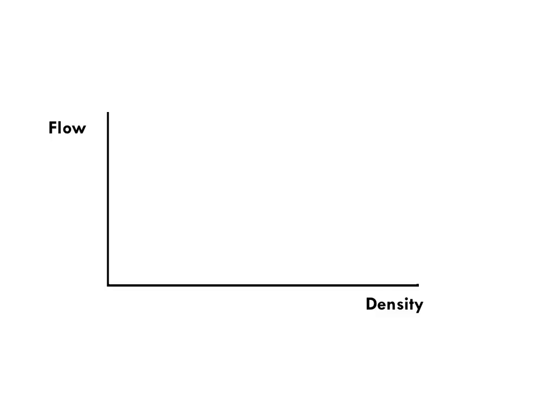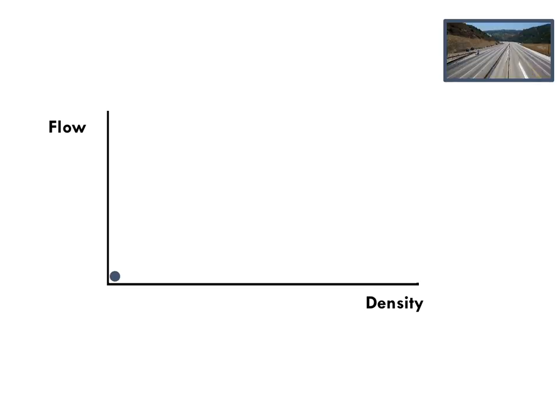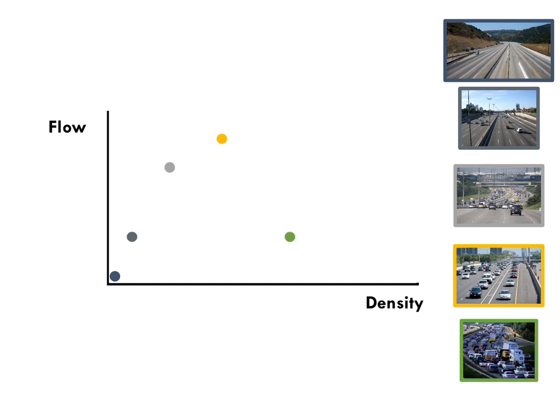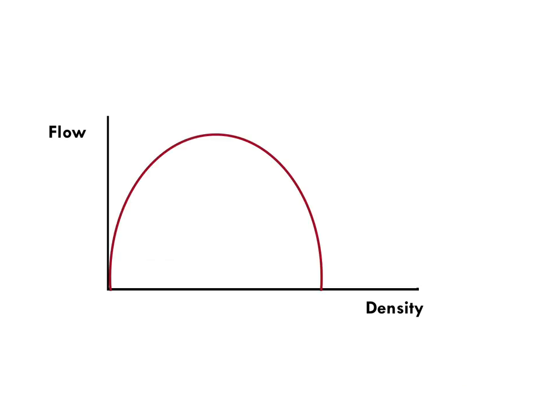I want you to take a moment to think about the relationship between flow and density. Try to graph out each of the points we've seen so far. Here's what that looks like: low density and low flow in the lower left corner. As we move to the right, we increase density and increase flow — up until a point. Then adding more cars actually reduces the flow of the roadway. It looks something like this.